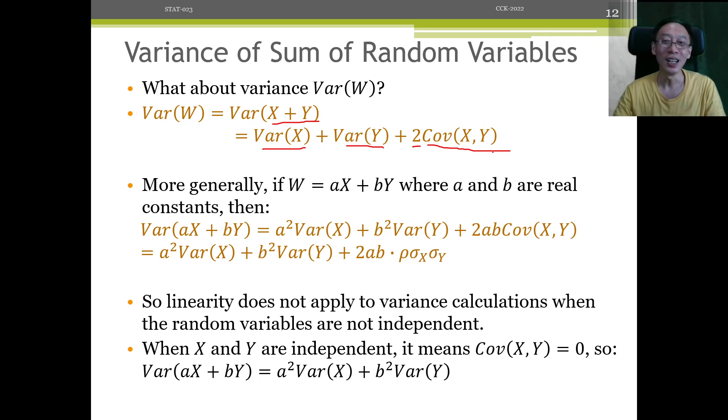So very interestingly, covariance pops back in again. Okay, and in the general case, when we scale X and Y, remember X is a little normal distribution or any other shape and Y is yet another spiky normal or any other shape. So we are trying to scale the two distributions then combine them by adding the values. Then answer the question, what is the resulting variance of such a W, aX plus bY?